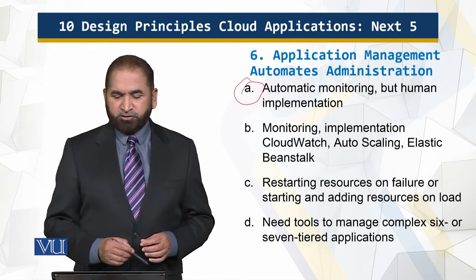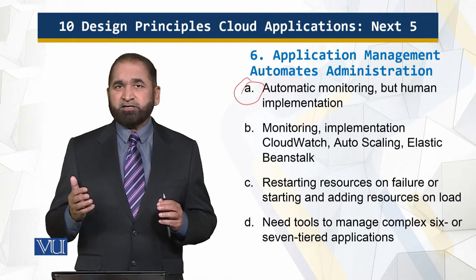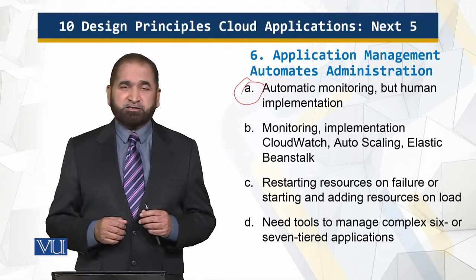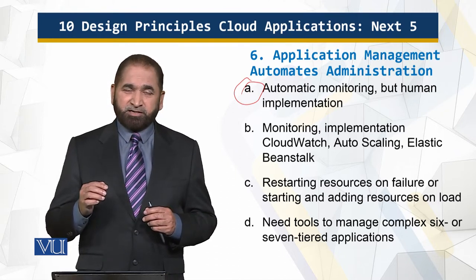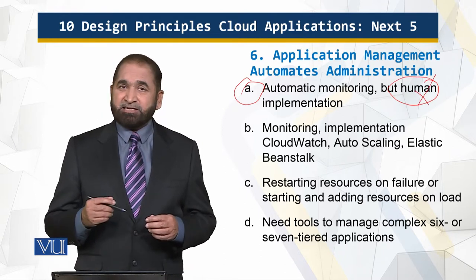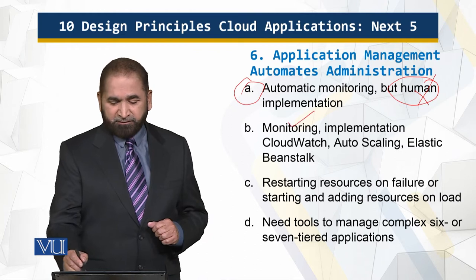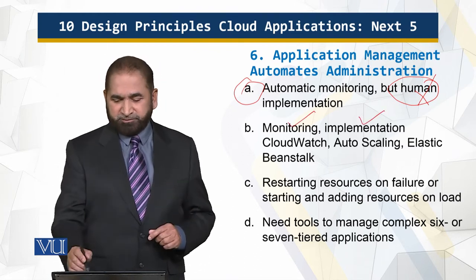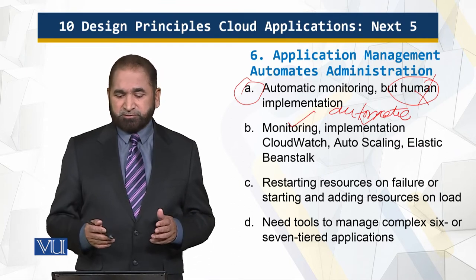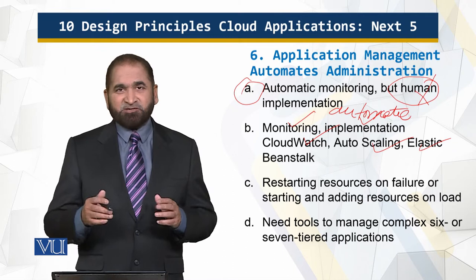Automation is good but human implementation should not be required. We discussed in the previous module that the system is not feasible to monitor manually — now the system is monitored automatically, as Amazon Web Services does. Not only is the system monitored automatically, but actions are also implemented automatically, ensuring 24/7 operation. The tools used by AWS for this are CloudWatch, Auto Scaling, and Elastic Beanstalk.